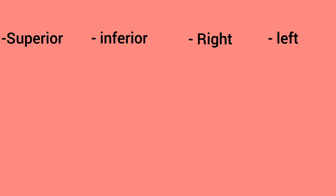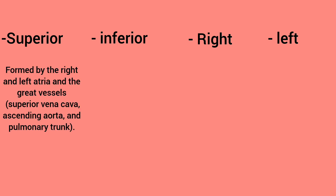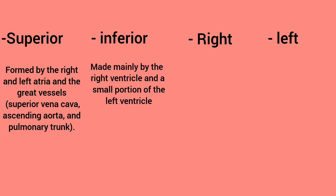The superior border is formed by the right and left atria and the great vessels, which are the superior vena cava, the ascending aorta, and the pulmonary trunk. The inferior border is made up of the right ventricle and a small portion of the left ventricle. The right border is formed by the right atrium.